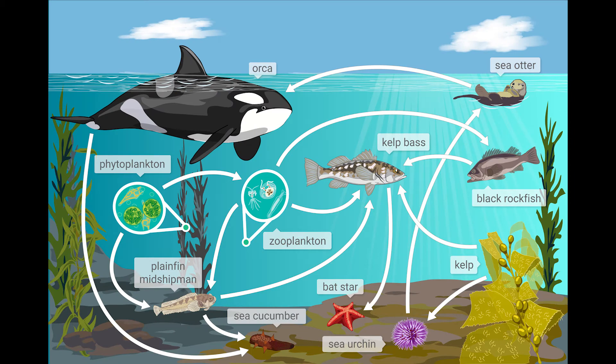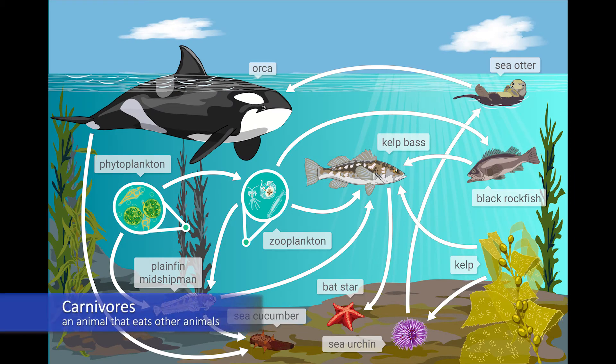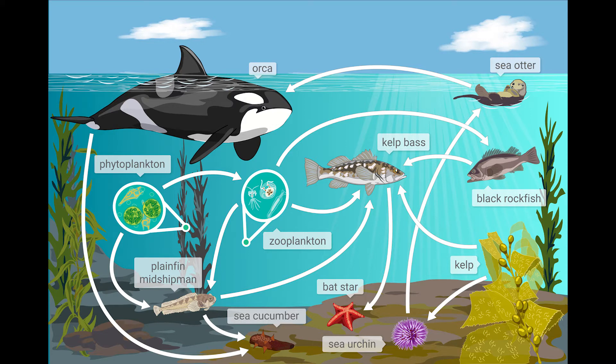Primary consumers are eaten by secondary consumers or carnivores such as moon jelly, moon snails, sand lance, and Pacific herring. These animals are then eaten by a higher level carnivore like great blue herons, harbor seals, salmon, and sharks, which eventually leads to our apex predator, the orca.